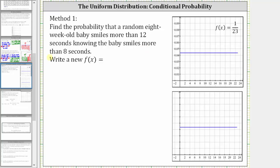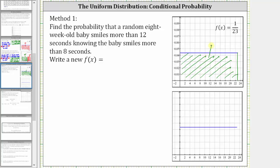We know for the given probability density function f of x equals 1/23, the area under the curve from 0 to 23 is equal to 1, or 100%. We know this area is equal to the base times the height, where the base is 23 and the height is 1/23. But in this case, we already know the baby smiles more than eight seconds, and therefore we're not considering the entire interval from 0 to 23, only from 8 to 23.